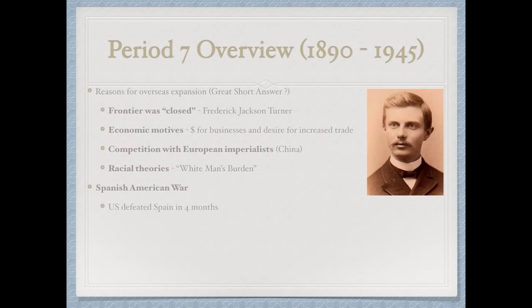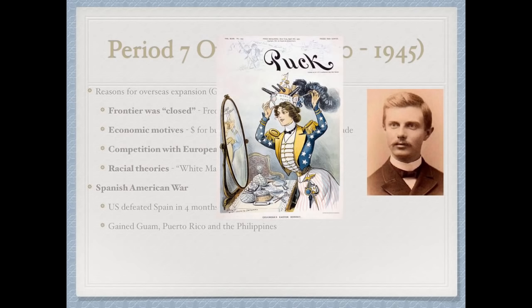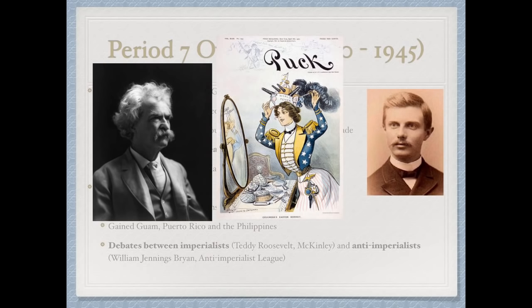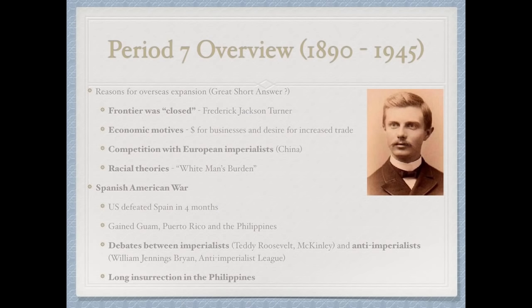The Spanish-American War occurred in 1898, and the US defeated Spain in four months, gaining Guam, Puerto Rico, and the Philippines. A debate emerged between imperialists like Teddy Roosevelt and McKinley versus anti-imperialists like William Jennings Bryan and Mark Twain, who was a member of the Anti-Imperialist League. Anti-imperialists argued that the people of the Philippines deserved the consent of the governed — the same principles the US fought a revolution for. This led to a long insurrection in the Philippines as they had hoped for independence.